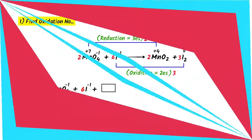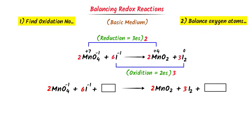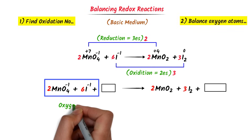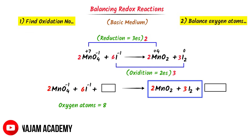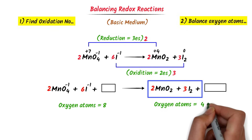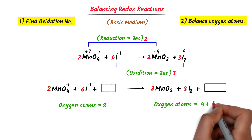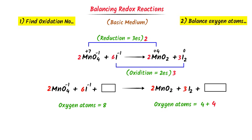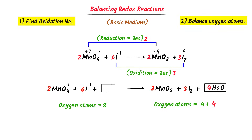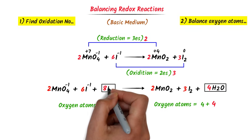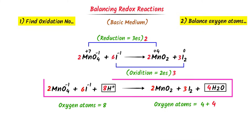The second step is to balance oxygen atoms. In the reactants, 2×4 = 8 oxygen atoms. In the products, 2×2 = 4 oxygen atoms. We need 4 more oxygen atoms, so I place 4 molecules of water on the product side. I double the number and add 8 hydrogen ions. So this redox reaction is now balanced in acidic medium.